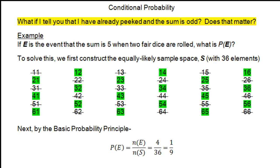I would hope you agree that the answer is obviously yes, it should matter. If you look at the sample space and you know the sum is odd, all the even sums can be eliminated as possibilities. You're not going to have a (2,2) or (3,3) or (1,5) because those sum to even numbers. So the only thing you're left with are the 18 odd sums.